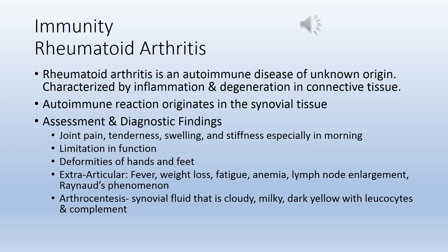Rheumatoid arthritis is an autoimmune disease of unknown origin. Research has identified that the autoimmune reaction originates in the synovial tissue. Environmental factors such as cigarette smoking and genetic factors combine to produce inflammatory and destructive synovial fluid, starting in the more distal joints. The rheumatoid arthritis synovium breaks down collagen, causing edema, proliferation of synovial membrane, and ultimately pannus formation. Pannus destroys cartilage and erodes the bone, resulting in loss of articular surfaces and joint motion. Tendon and ligament elasticity and contractile power are lost.